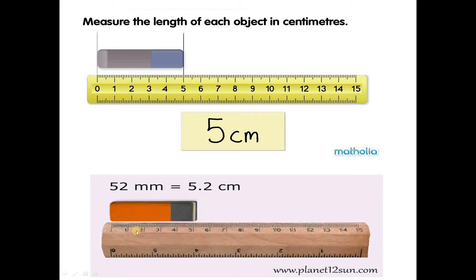On this scale, there is also one eraser. From the starting point — one, two, three, four, five. After five, there are two more small lines, meaning 10, 20, 30, 40, 50. So 52 millimeters — you can write it as 5.2 centimeters.